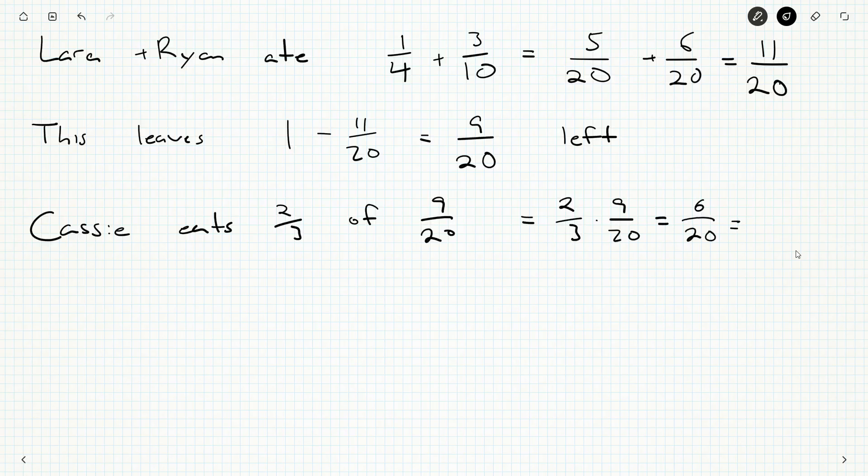But, of course, we can divide top and bottom by two and get three tenths. So, Cassie also eats three tenths of the pie. Nifty. So, she eats that amount of the pie and so that will be taken away.